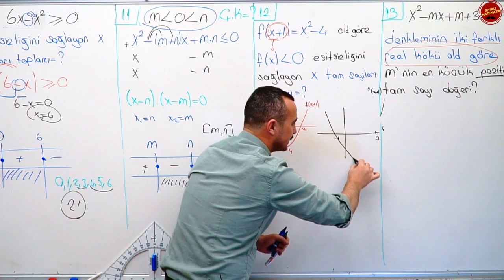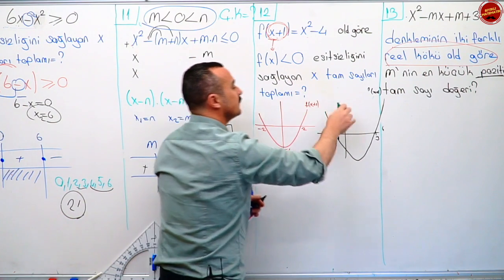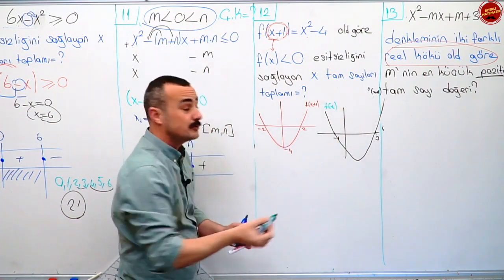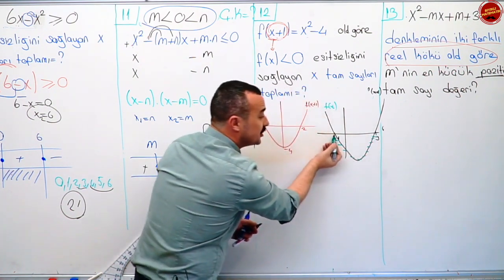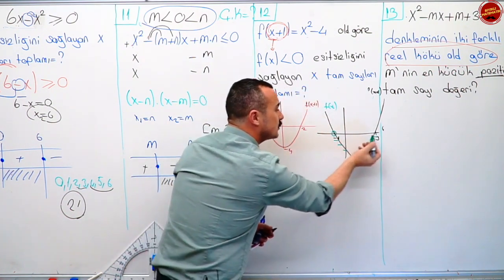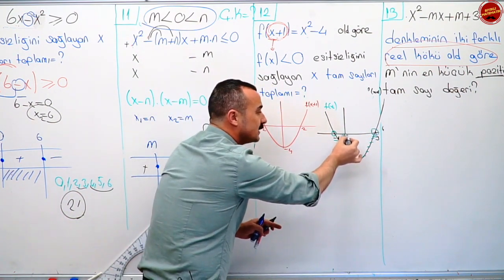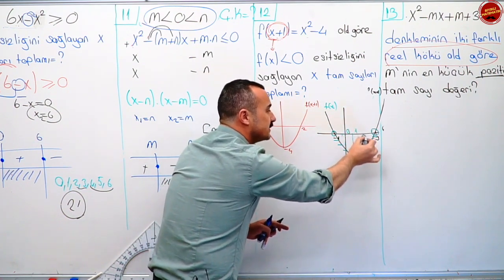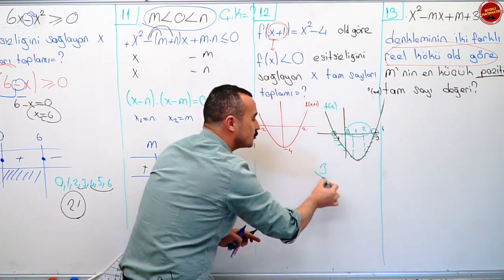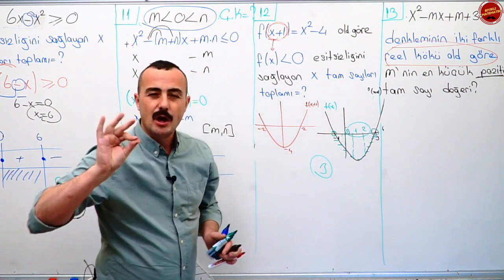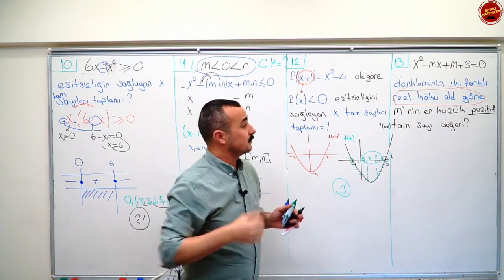O zaman Fx'imin grafiği şöyle olacak: bir birim sağa kayacak. Eksi iki olan köküm eksi bire dönüşecek, iki olan köküm üçe dönüşecek. Şimdi Fx'in grafiği bu. Fx'in sıfırdan küçük olmasını istiyor. Eşitlik olmadığı için eksi bir ve üç noktalarının içi boş. O zaman tam sayı değerlerim: sıfır, bir, iki. Toplamları isteniyor: cevap üçtür. Bu çözümleri de öğrenmeye çalış. Parabol ile birleştir konuyu.